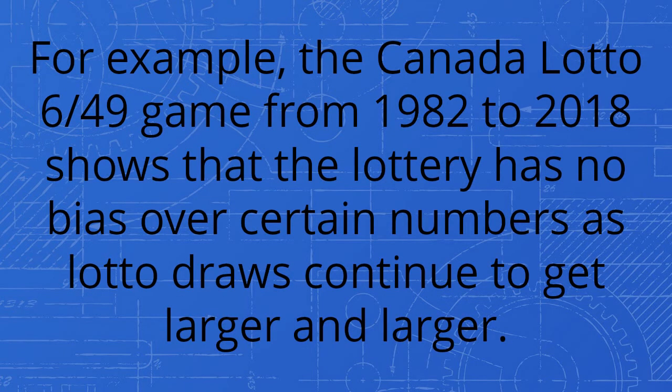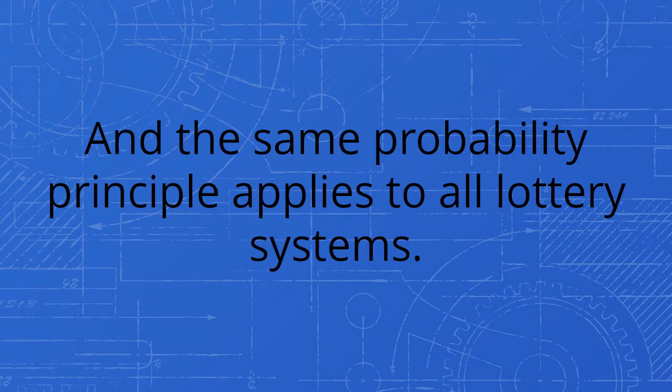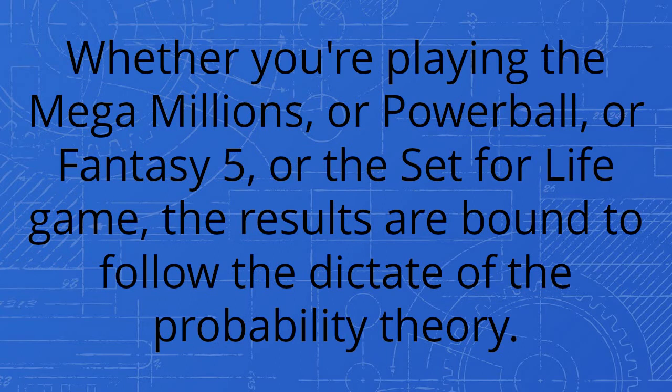For example, the Canada Lotto 6/49 game from 1982 to 2018 shows that the lottery has no bias over certain numbers as lotto draws continue to get larger and larger. And the same probability principle applies to all lottery systems. Whether you're playing the Mega Millions, or Powerball, or Fantasy 5, or the Set for Life game, the results are bound to follow the dictate of the probability theory.